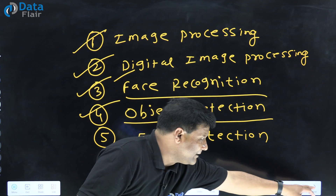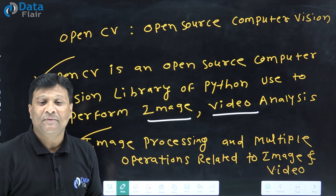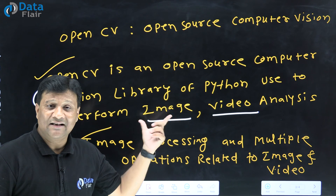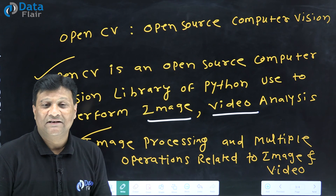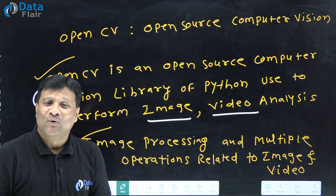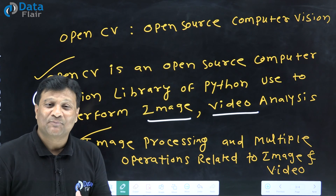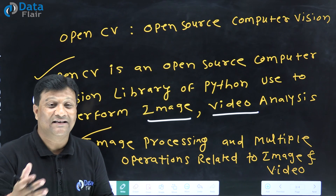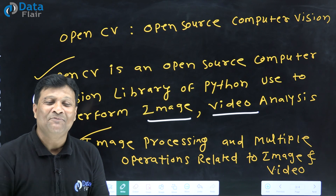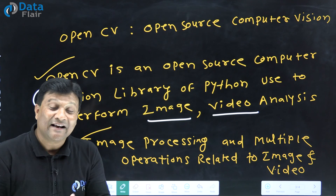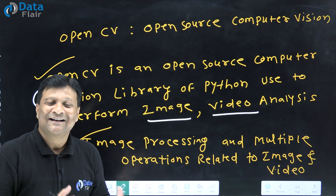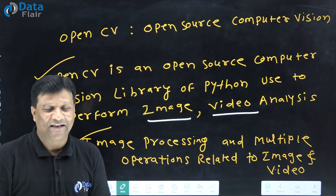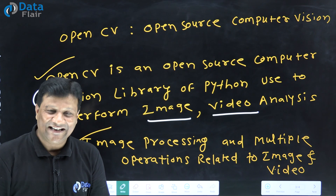To summarize: OpenCV is an open source library of Python for image and video analysis, and all operations related with video and image analysis we can perform with this OpenCV library. Next, we'll talk about installation and how to design an image processing application using OpenCV. I hope the concept is clear — why we should go for this OpenCV library. Please do like, share, and subscribe because we are going to talk about very important applications with OpenCV. Till then, take care, bye bye.